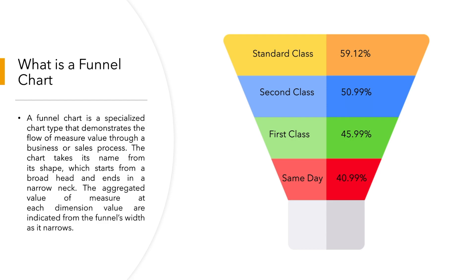A funnel chart is a specialized chart type that demonstrates the flow of stages in the form of measure values through a process. It can be any business process, but mainly it is used for sales process. As the name suggests, it's in the form of a funnel where the start of the funnel chart is from the top headband and it ends at a narrow neck. Each band shows the aggregated value of the measure at each dimension value, indicated by the funnel width as it narrows down.